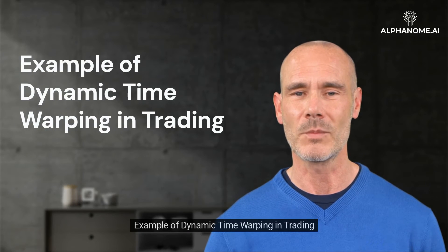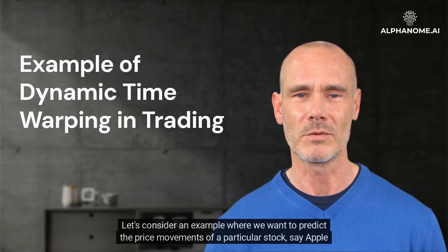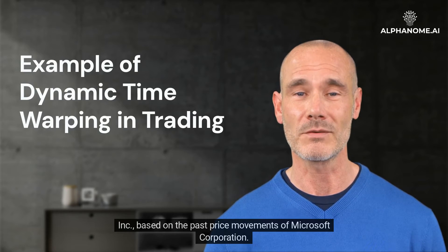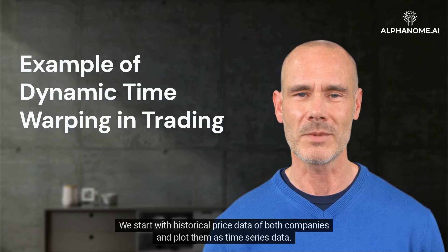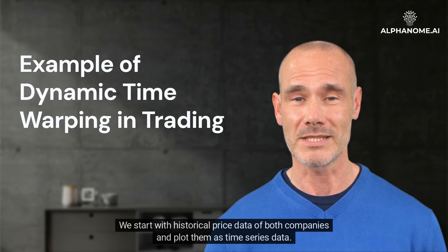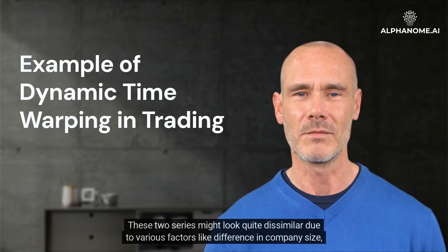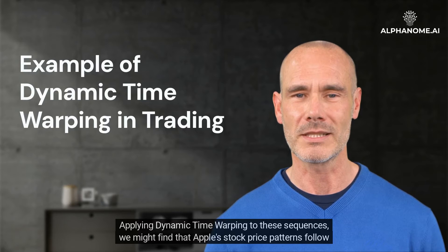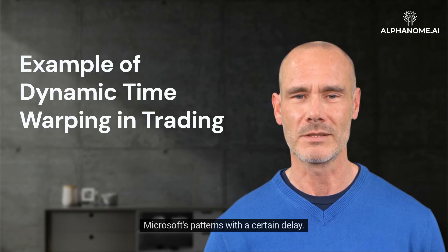Let's consider an example where we want to predict the price movements of a particular stock, say Apple Inc., based on the past price movements of Microsoft Corporation. We start with historical price data of both companies and plot them as time series data. These two series might look quite dissimilar due to various factors like difference in company size, market sector, etc. Applying Dynamic Time Warping to these sequences, we might find that Apple's stock price patterns follow Microsoft's patterns with a certain delay.